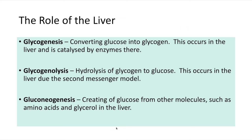Here are the key G-words to know: glycogenesis — 'glyco' means glycogen, 'genesis' means to create — so glycogenesis is creating glycogen from glucose. Glycogenolysis — 'glycogen' and 'lysis' means to split — so glycogenolysis is the splitting or hydrolysis of glycogen back into glucose. Gluconeogenesis — 'gluco' means glucose, 'neo' means new, 'genesis' means to make — so gluconeogenesis is making new glucose from non-carbohydrate sources such as amino acids from proteins and glycerol from lipids.